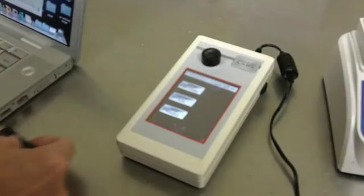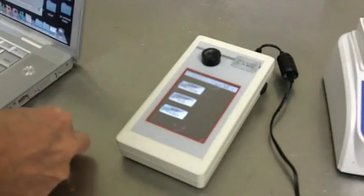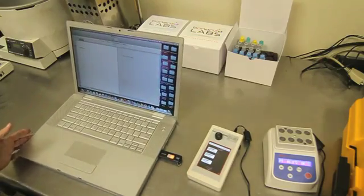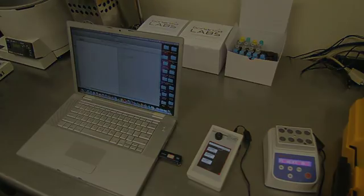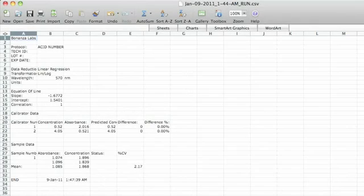The Excel spreadsheet names the test. You can add in who ran it, with what lot of biodiesel or fat, and it gives you all the data: regression, the slope, the intercept, the correlation, what the value of the calibrators are, and what the value of the sample was that was read, its concentration, and its percent CV.